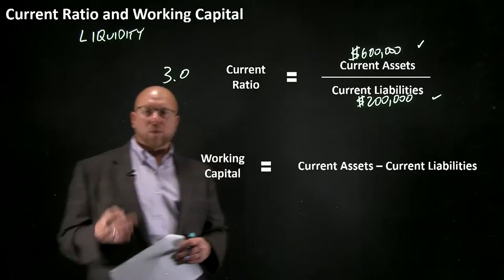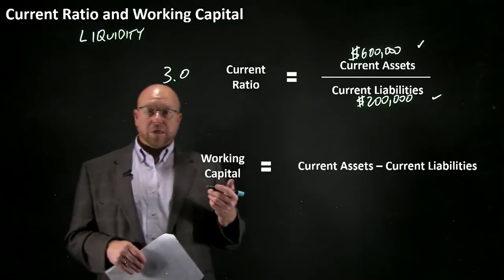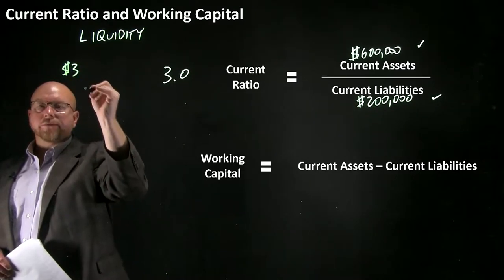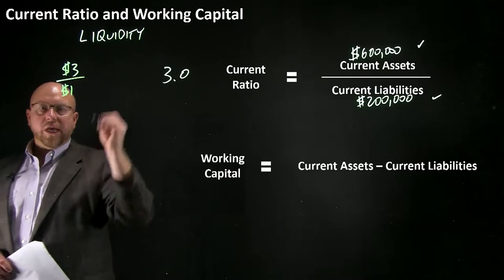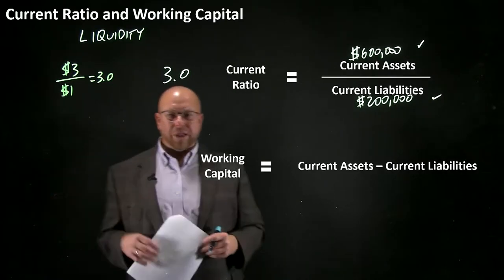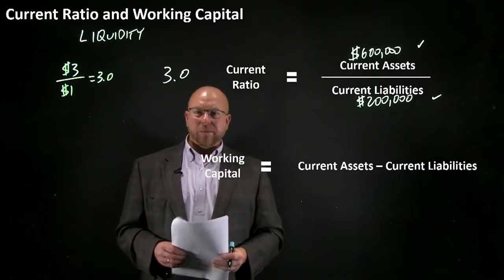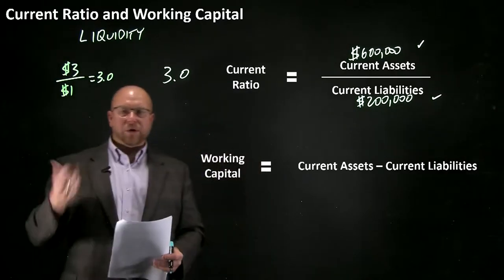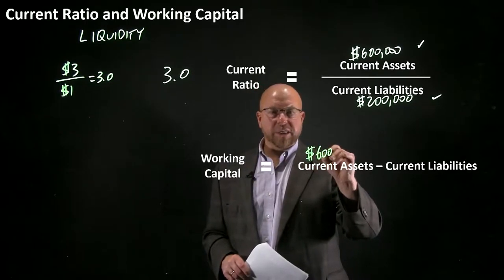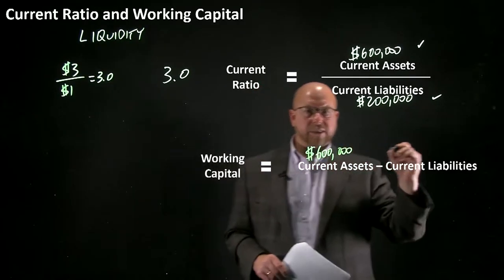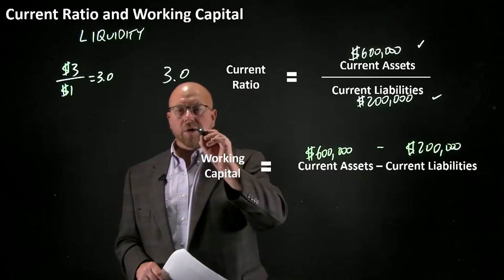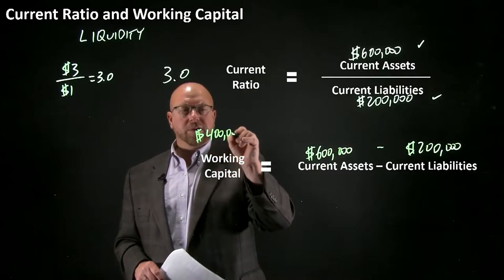The current ratio only tells one part of the story. You could have a current ratio — if you had current assets of $3 and current liabilities of $1 — you'd have a current ratio of 3.0, but you would only have $2 of working capital. Two scenarios produce the same current ratio. That's why it's important to also have a measurement of working capital, which is simply the difference between your current assets and your current liabilities. This helps you with the magnitude of the difference between those two.